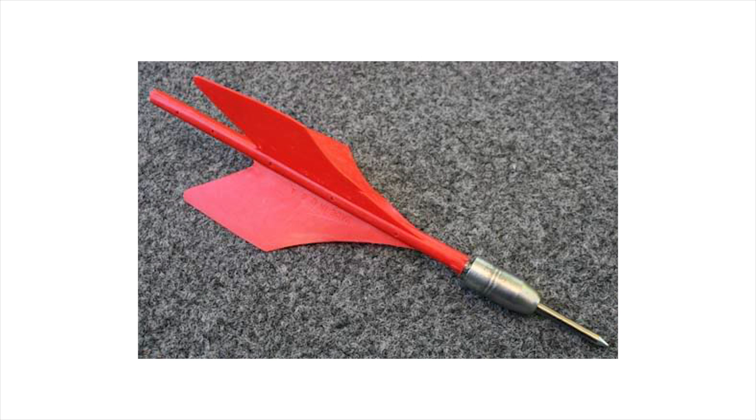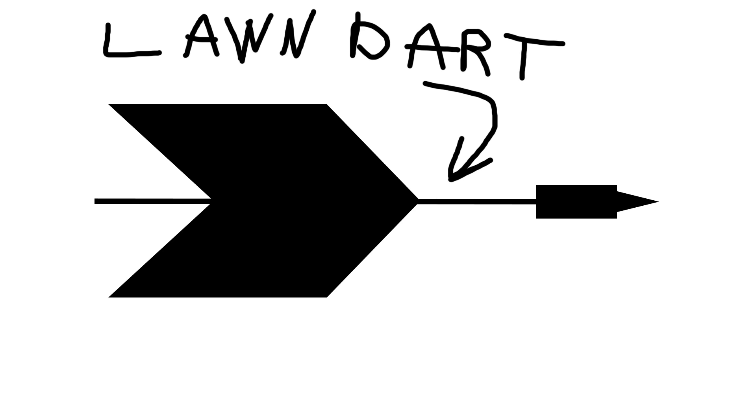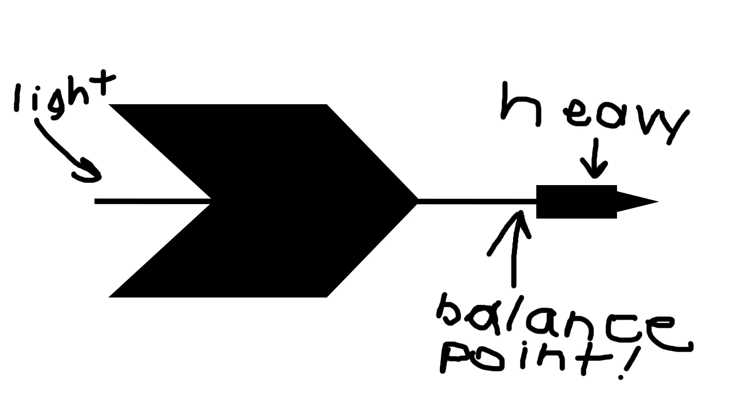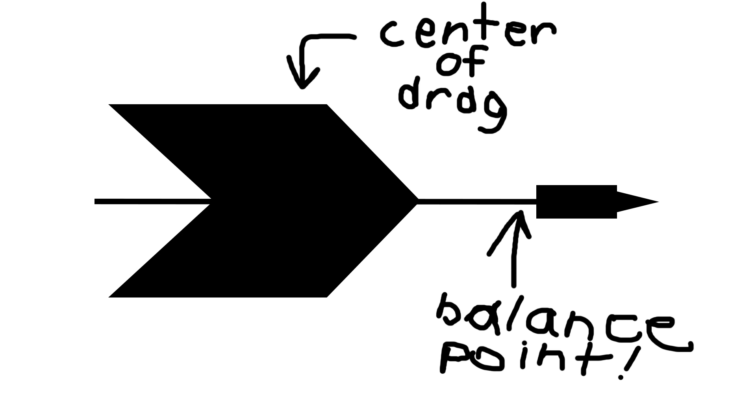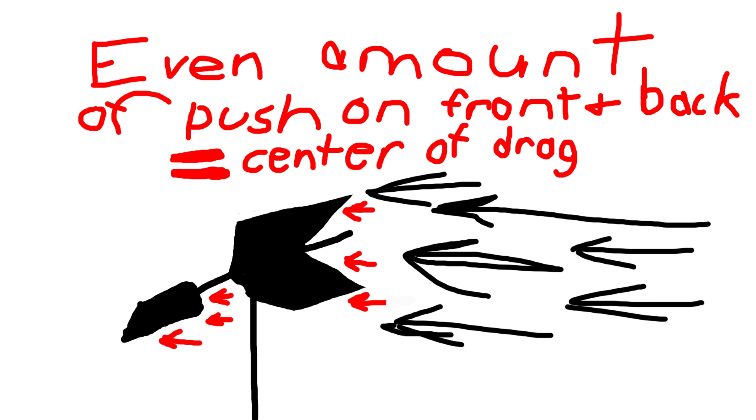Our first example is a lawn dart. All the weight is at the front, all the drag is at the back. So your balance point for this thing is really far forward, and your center of drag, or if you held it and blew on it from the side, the point at which it wouldn't spin around but it would just sit sideways, is really far at the back.